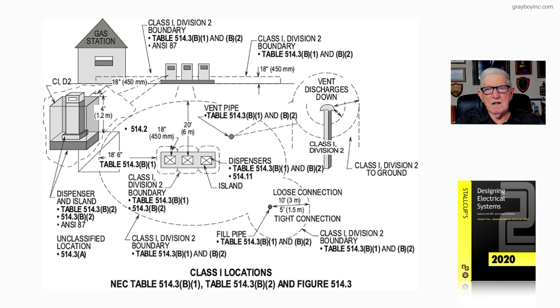So we have to look at that. Loose connection, 10 feet out. Nothing can go there without being rated for a Class 1 Division 2 location if you're in that area. 5 feet out would be for a tight connection. And all those boundaries are found in the table, as you see there, 514.3B1 and B2.